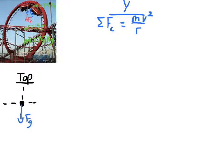Let's work a couple of problems with roller coasters and vertical loops. We did a car with a horizontal loop and a ball spinning horizontally. So now let's do a vertical loop where we need to deal with gravity. The first thing I want to ask is: what is the minimum speed that a roller coaster could go to make it through the loop?